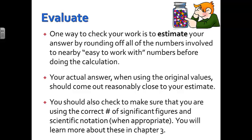One way to check your work is to estimate your answer by rounding off all of the numbers involved to some nearby easy-to-work-with numbers before doing the calculation. Your actual answer, when using the original value, should come out reasonably close to your estimate. You should also check to make sure that you're using the correct number of significant figures and using scientific notation if it's appropriate. Now, these two concepts we will come back to in Chapter 3. We're not quite ready for those yet.